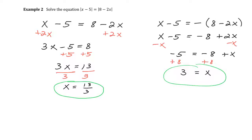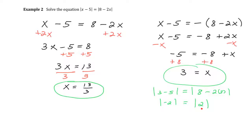Checking X equals 3: the absolute value of 3 minus 5 equals the absolute value of 8 minus 2 times 3. The left side gives the absolute value of negative 2, and the right side is 8 minus 6, which is positive 2. By making one side negative, we get negative 2 and positive 2 — different values, but after taking the absolute value, both give 2 equals 2. So X equals 3 is confirmed.